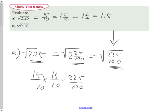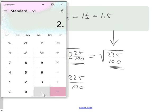If I take my calculator to confirm it, 2.25, and use the square root button, it will confirm that the square root is 1.5.